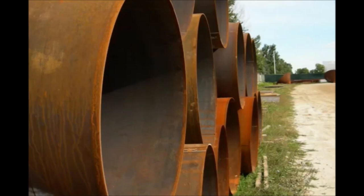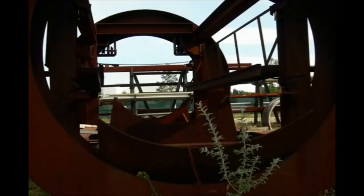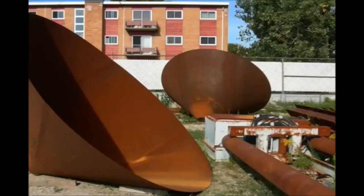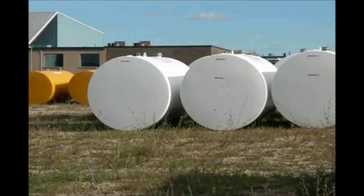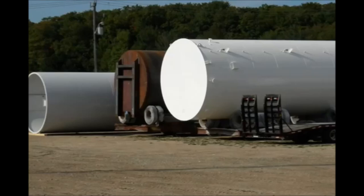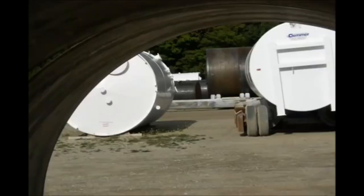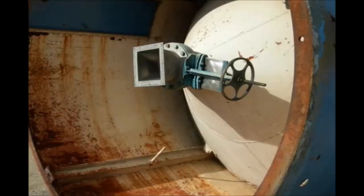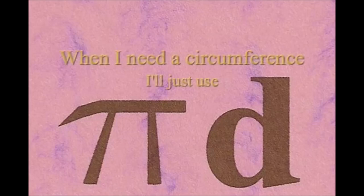Here is a circle, it knows how to get around. It has a radius from center to rim. And its diameter's a line that goes from side to side while passing through the center, now isn't that simple. Pi r squared sounds like area to me — when I need a circumference, I'll just use pi d.